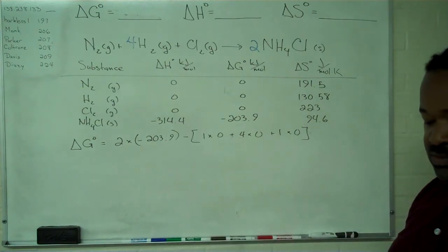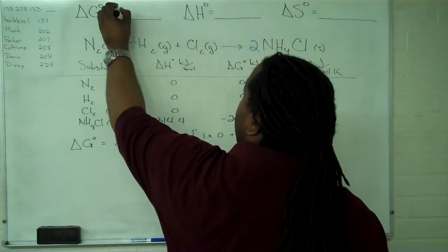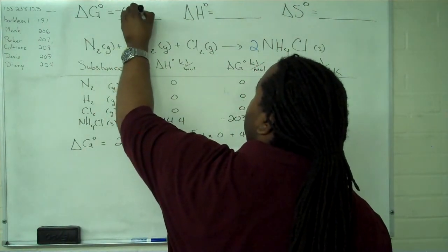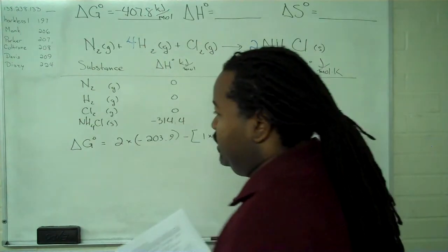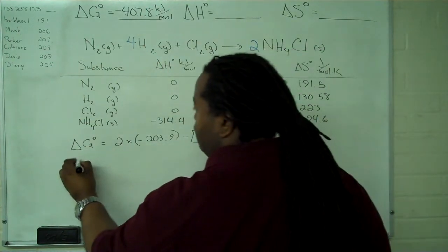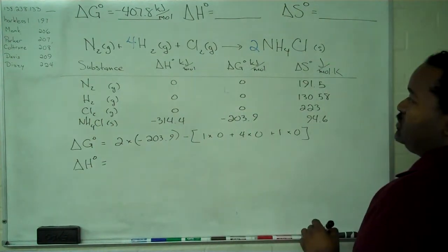Multiplying through and simplifying everything, we get minus 407.8 kilojoules per mole for delta G standard. The standard enthalpy works exactly the same.